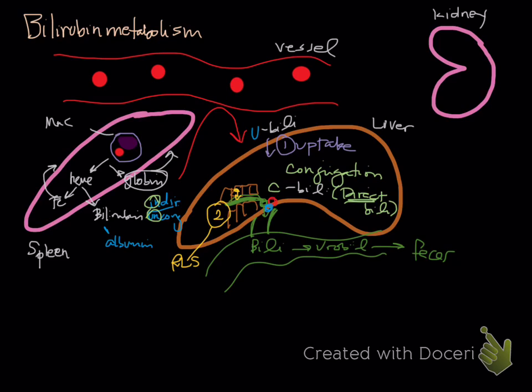Some urobilinogen's actually reabsorbed by the portal vein. Some of that's reabsorbed and goes to your liver and is taken up via the blood to the kidney, and that's why you'll see some urobilinogen in your urine. We can use it as a test of patency of our bile duct, but we don't necessarily talk about that a lot.